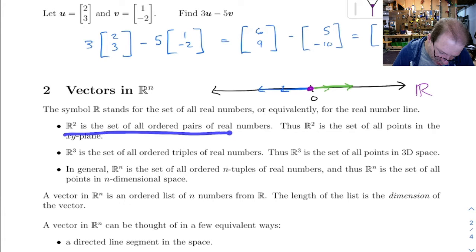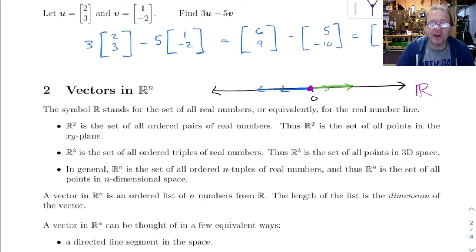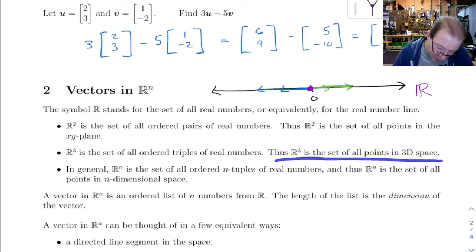R^2 is the set of all ordered pairs of real numbers, so R^2 is also the set of all points in the x-y plane. R^3 is the set of all ordered triples, and so R^3 is the set of all points in 3D space.